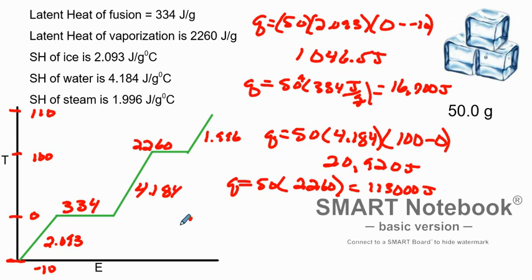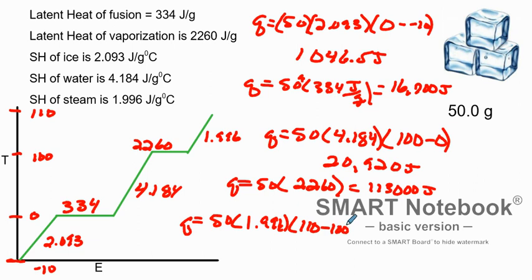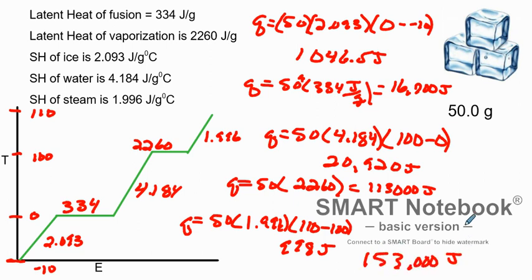Now we're heating the steam, so q equals 50 multiplied by the specific heat of steam, 1.996, multiplied by the temperature difference of 110 minus 100. That comes out to 998 joules. Adding all of those values together, we get approximately 153,000 joules to take 50 grams of ice from negative 10 degrees all the way up to 110 degrees Celsius.